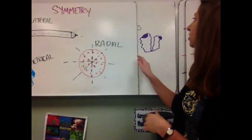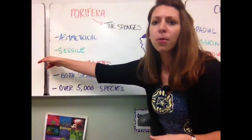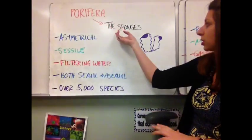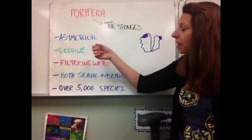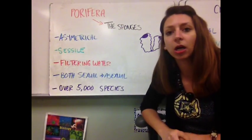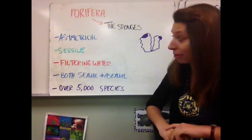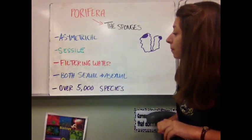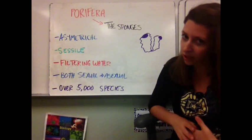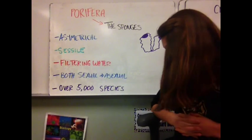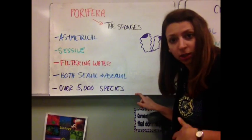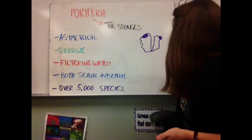Let's start with our Porifera — the sponges. Sadly, they are asymmetrical. They are sessile, which means they are living but attached to something and do not move. They feed by filtering water. They have both sexual and asexual reproduction, and there are over 5,000 species of sponges.